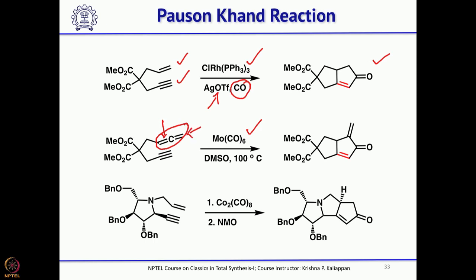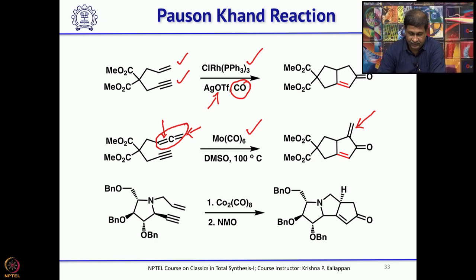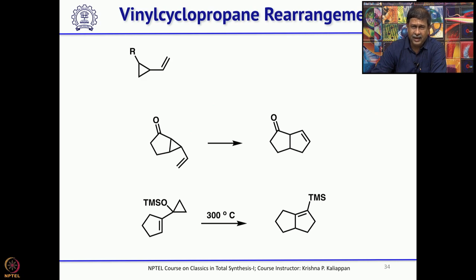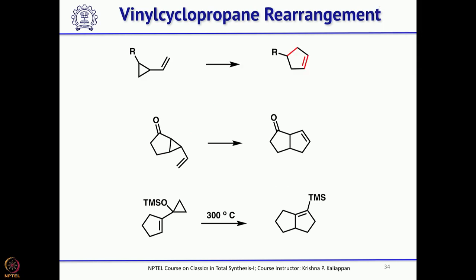In the allene variant, the terminal double bond becomes an exocyclic double bond. One can also apply this to hetero triquinanes — in this particular case, you have a nitrogen, and with this nitrogen one can make the azatriquinanes using the Pauson-Khand reaction as the key reaction. There are other methods, as I said, used for making 5-membered rings.